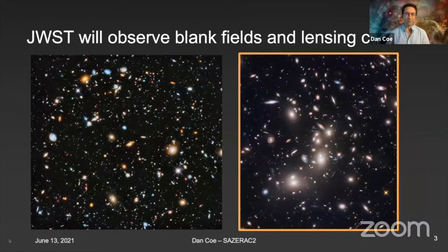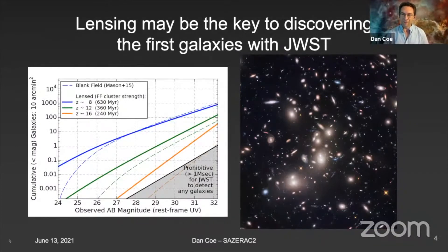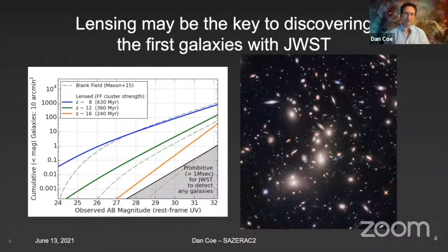We've heard plenty of talks about the many blank fields and also lensing clusters that we'll be observing with James Webb. I'm going to focus on the lensing clusters in this talk and give an overview of the different observing programs. Why lensing? One of the simplest reasons is that lensing will be the key to discovering the first galaxies with JWST. This is my prediction given naive assumptions, but if the luminosity functions continue to steepen, there'll be many small, faint galaxies, and the lensing advantage will multiply even more at high redshifts. But it's going to be difficult to look through the cluster light, so we have to make sure our tools are up to that task.